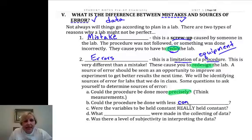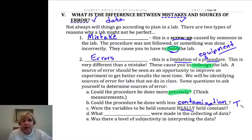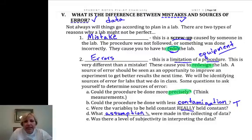Could it be done with less contamination? Were there steps in there that it was very difficult to get rid of contamination? Were the variables that were supposed to be controlled really controlled? You may think you had the temperature controlled in your experiment, but maybe it fluctuated a degree or two throughout the experiment. Are there some sort of assumptions that were made in collecting the data? Assumptions about properties and behaviors of chemicals and in chemical reactions? And we mentioned that subjectivity in interpreting the data. And so all of these make us think of ways to redesign our laboratory experiments.